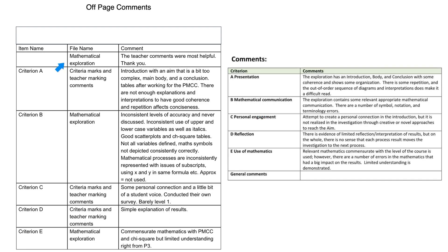It was written at the top here, which was much appreciated by me — the teacher comments were most helpful. Criterion A is presentation: introduction with a name that is a bit too complex, main body and a conclusion, tables after working for the Pearson product moment correlation coefficient.